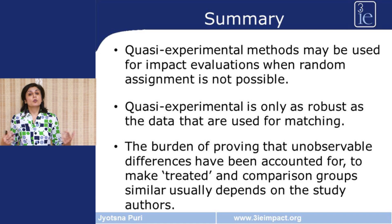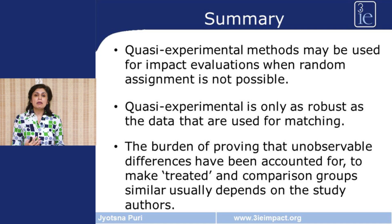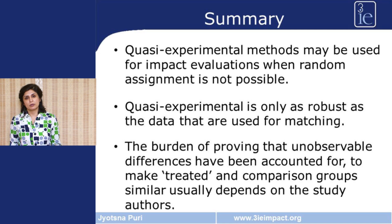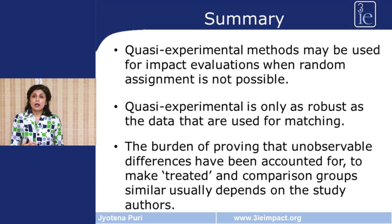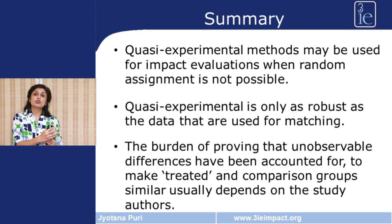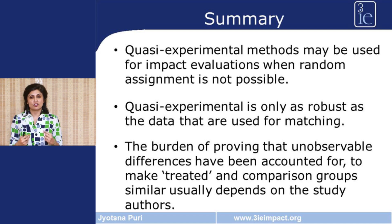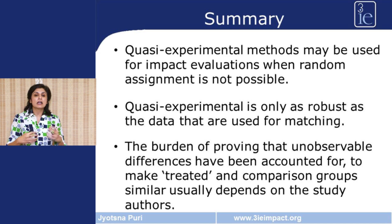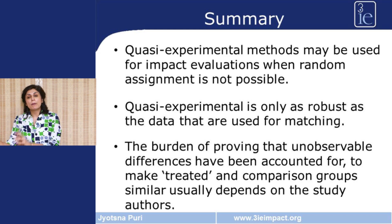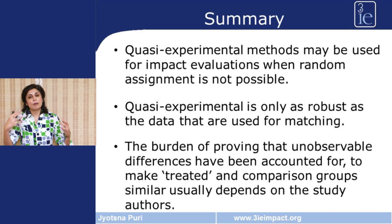In summary, quasi-experimental methods may be used for impact evaluations when random assignment is not possible. Although they are useful for getting past questions of whether the program caused the attributable change in outcome, quasi-experimental methods are only as robust as the data used for matching. The burden of proving that unobservable differences have been accounted for — making the treated groups and comparison groups similar — is usually upon the study authors. Thank you so much for watching, and I urge you to take the quiz associated with this lecture.